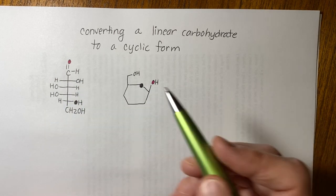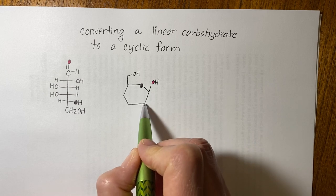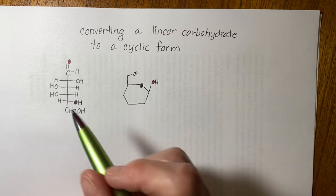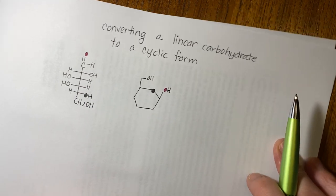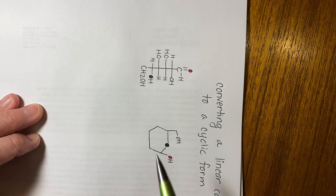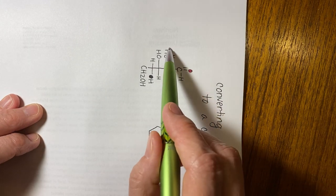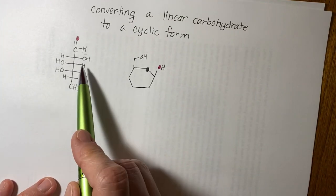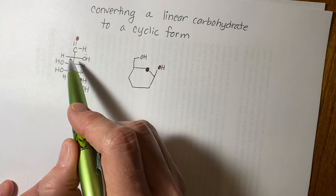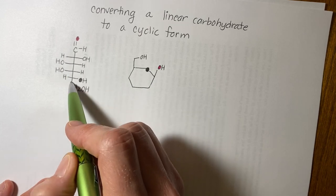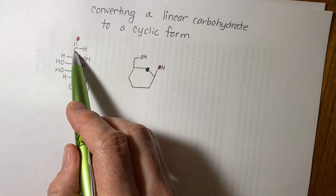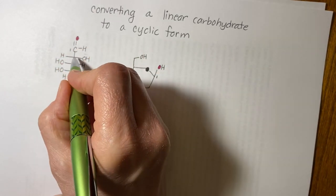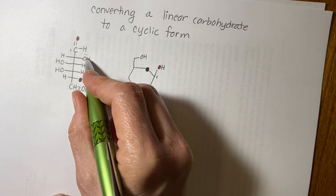The ones that are important are the hydroxyls at positions two, three, and four — they determine which sugar it is. If you just turn the linear form sideways, some are on the bottom and some are on the top of the ring. If they're on the right-hand side in the linear form, they're going to be on the bottom of the ring. You can consider this vertical line the plane of the ring.